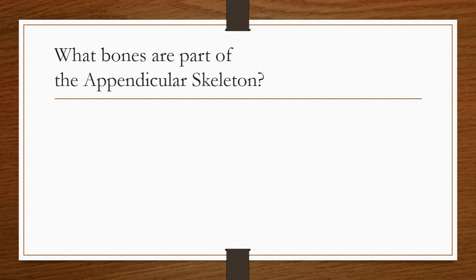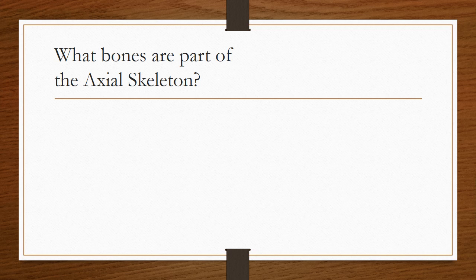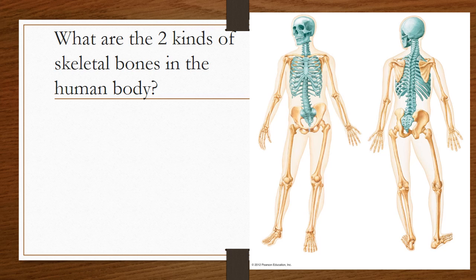What bones are part of the appendicular skeleton? It may help to think of your appendages. That's right — it's your arms, your legs, fingers, and toes. What bones are part of your axial skeleton? It might be helpful to picture an axis that goes through the core. The bones of the axial skeleton include your skull, your backbone, and your rib cage.